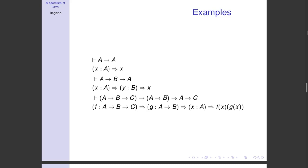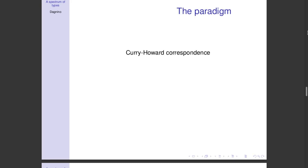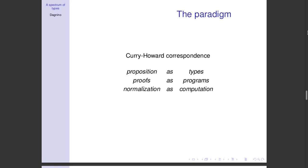This is a more general paradigm called the Curry-Howard correspondence, which is based on three statements. This correspondence is a correspondence between logic and types. The idea is to see propositions — formulas — as types, to see programs as proofs, and normalization as computation. So the idea is: I write a formula which is a type, and if I can write a program of that type, I have proved that formula.